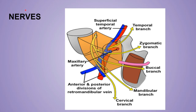The facial nerve is derived from the second branchial arch. It leaves the skull by passing through the stylomastoid foramen, which is present at the posterior part of the root of the styloid process of the temporal bone. After leaving the skull, the facial nerve crosses the lateral side of the base of the styloid process and enters the posteromedial surface of the parotid gland.